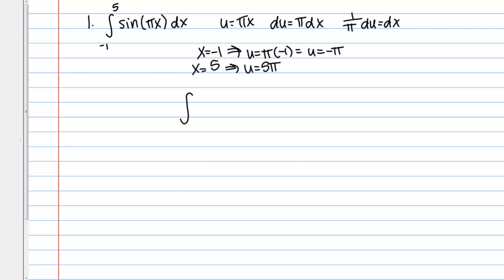Then we can entirely rewrite the integral. The bounds now are negative pi to 5 pi. Then what about the inside? I have sine of u, and then dx is 1 over pi du, so I'm going to go ahead and put that 1 over pi out front.